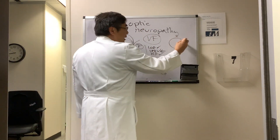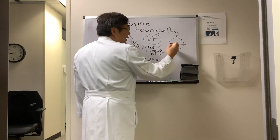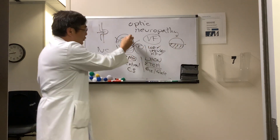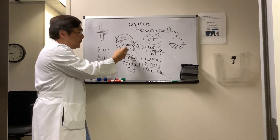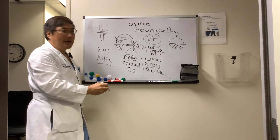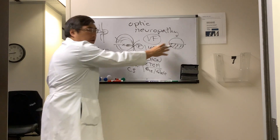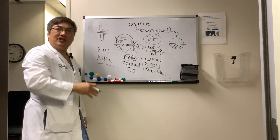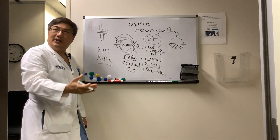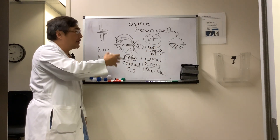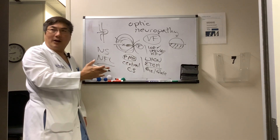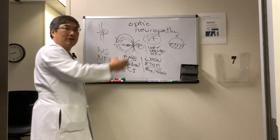Because the blood supply of the eye is a superior and inferior arcade, both in the optic nerve and in the retina, altitudinal field defects suggest vascular etiologies — most commonly non-arteritic anterior ischemic optic neuropathy.